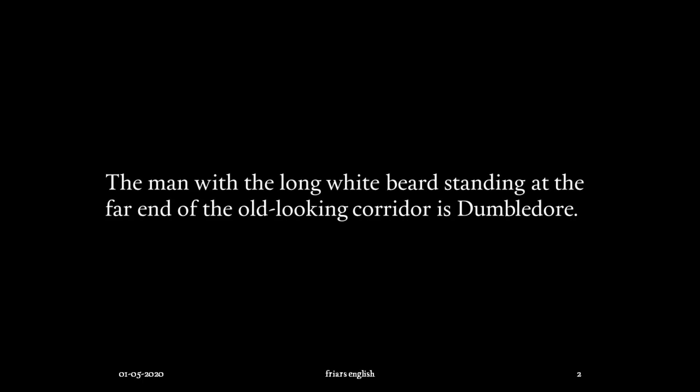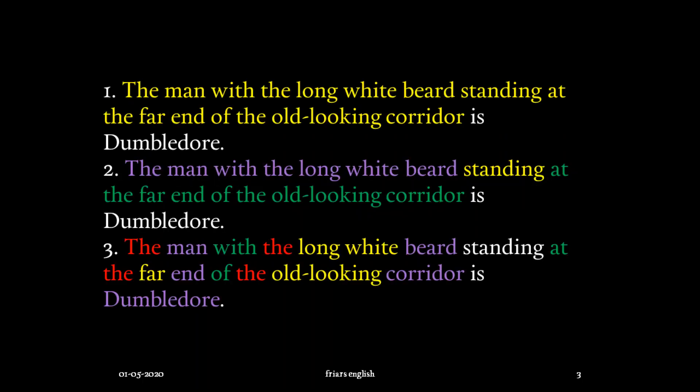Pause the video and try to divide the sentence. You can see three ways in which I have divided the sentence. First, we have this yellow part which is, like all sentences, having two conceptual divisions. The first word in yellow is called the subject and that in white is called the predicate.